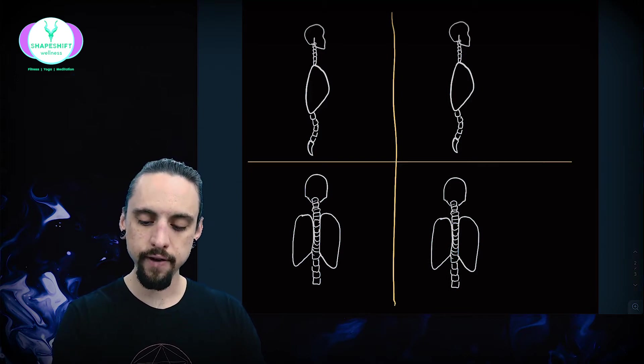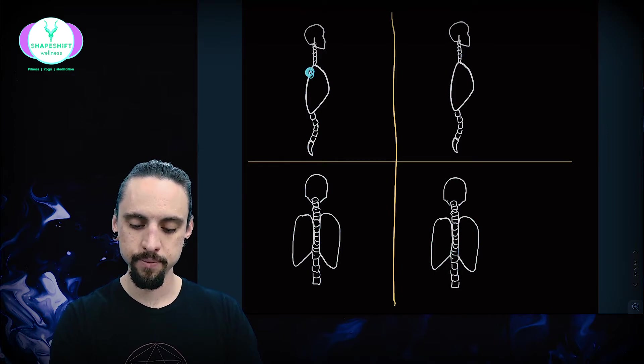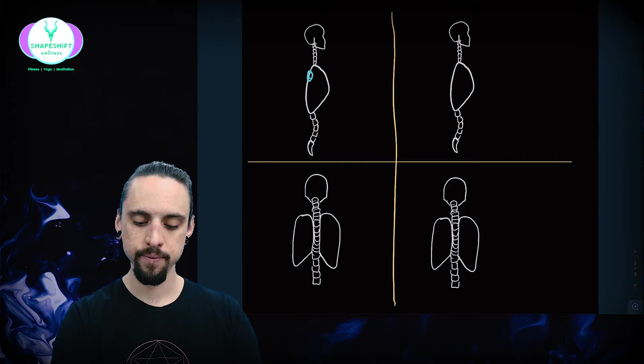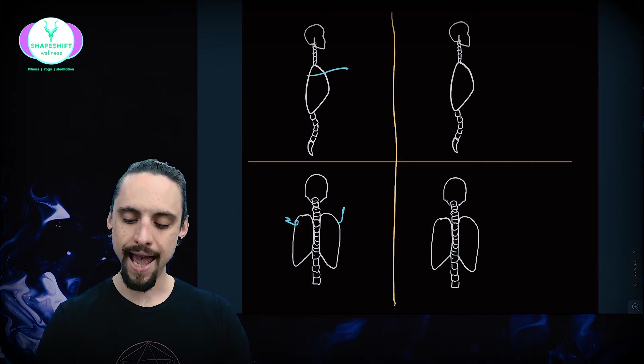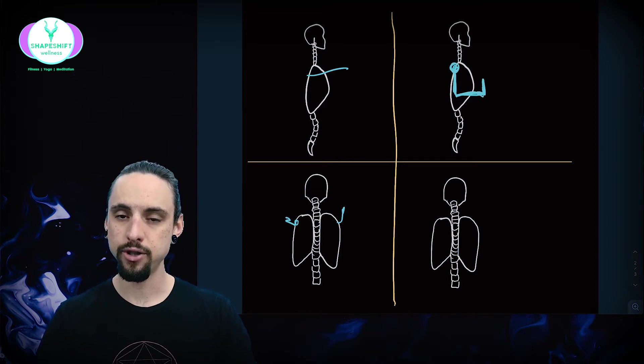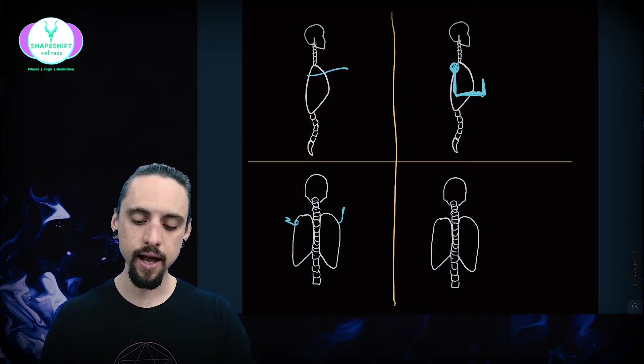If our arms are reaching from here back and then down—excuse me, we're at the top, so if we start here and we are reaching forward towards the ground, and then we end in a position where we're here with our elbows basically back down here and our arms like that, then where should our shoulder blades be in that transition?